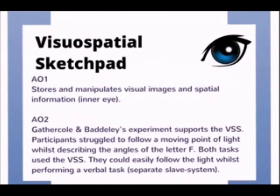The second slave system is called the visuospatial sketchpad, sometimes called the scratchpad, and this is able to store and manipulate visual images and spatial information — a bit like an inner eye. If you are asked to remember the details from a picture you have just been shown, you can conjure up an image of it in your mind's eye, and this is the visuospatial sketchpad at work.